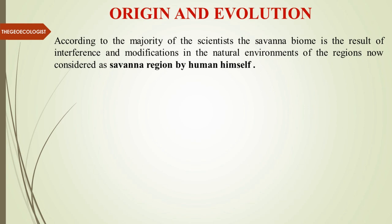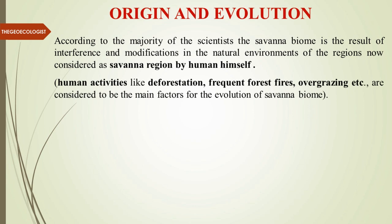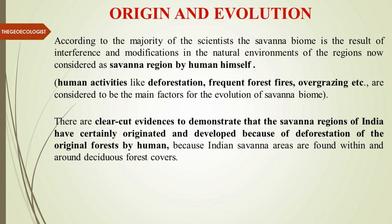According to the majority of scientists, the Savannah biome is a resultant of interference and modification in the natural environment. Human activities such as deforestation, frequent forest fires, overgrazing by animals — as practiced through horticulture and animal rearing — and also clearing of forests for fodder purposes and intrusion through agriculture have all played a role.